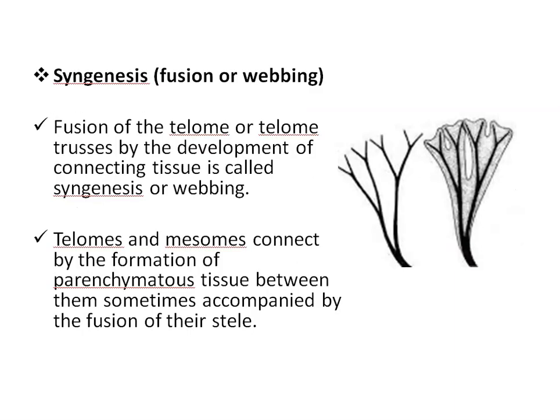The third process is syngenesis, meaning fusion or webbing. Fusion of the telomes or telome trusses occurs by the development of connecting tissues — similar to the webbing in the foot of a duck. Telomes and mesomes connect by the formation of parenchymatous tissues, sometimes accompanied by the fusion of the stele as well. Syngenesis is a very important elementary process because it explains the origin and evolution of both the leaf and the stele of the stem.